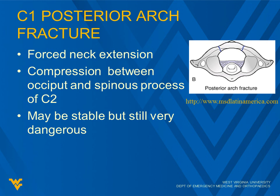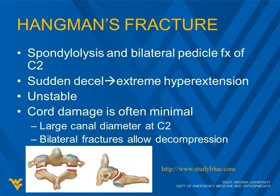A C1 posterior arch fracture typically results from forced neck extension with compression between the two pieces of bone. As we talked about, it may be stable but can still be very dangerous. The Hangman's fracture is spondylolysis and bilateral pedicle fracture of C2, caused by sudden deceleration with extreme hyperextension of the neck — a very unstable fracture. Core damage is often minimal, thanks to a large canal diameter at C2 and the fact that bilateral fractures allow for some decompression.